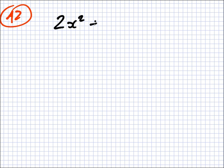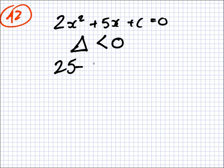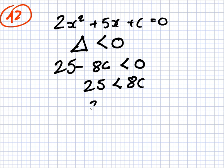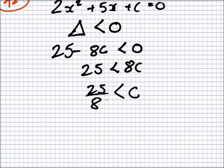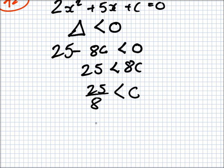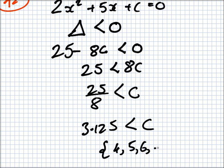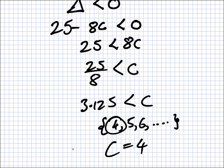A2. The quadratic equation 2x squared plus 5x plus c equals 0 has no real roots, and c is a positive integer. Find the smallest possible value of c. Since it has no roots, the discriminant must be negative: b squared minus 4ac must be less than 0. That means 25 must be less than 8c, so c is greater than 25 over 8, which is 3.125. The smallest integer greater than 3.125 is 4. So c equals 4.